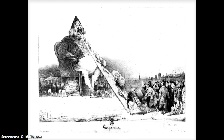Honoré Daumier was employed by Charles Philippon, and he was definitely one of the most notorious caricature artists of the time. This image here depicts King Louis Philippe as Gargantua, a name from a book written by Rabelais that was considered to be extremely crude, obscene, and vulgar. This was, of course, another social commentary, and this was an image that led him to become imprisoned for six months. This image was hugely critical of the government as well as their financial backers.